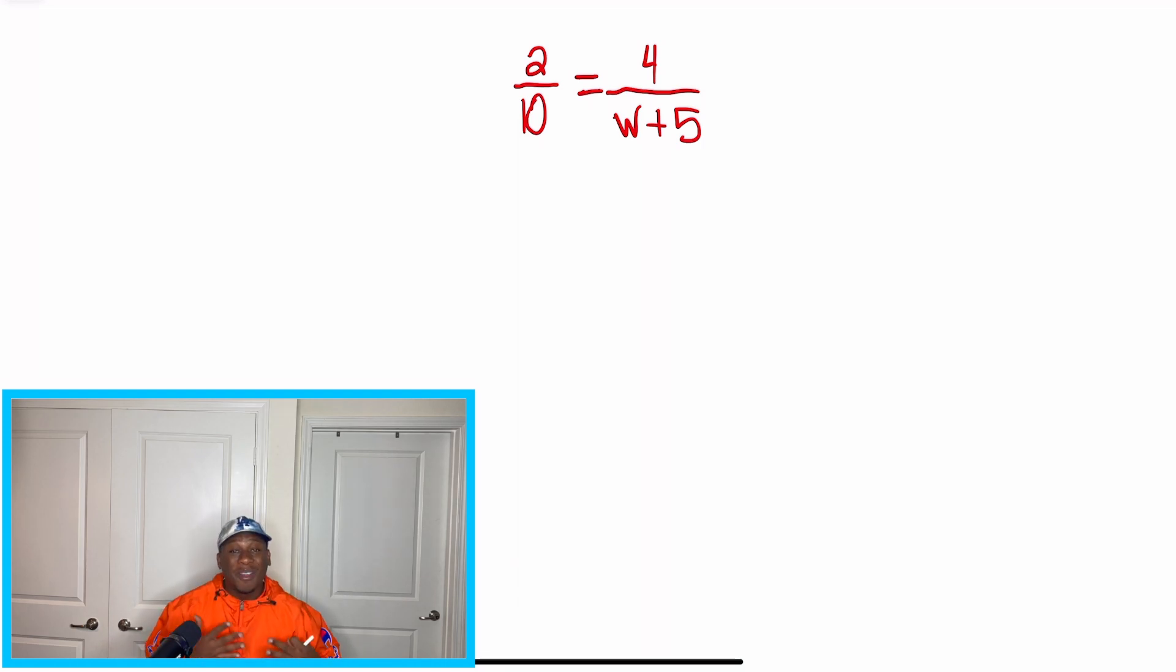We have 2 over 10 is now equal to 4 divided by W plus 5. So the three same rules or steps, they still apply. For step one, what I want to do is I want to draw my X. But the difference now is it's W plus 5. And that kind of throws us off.